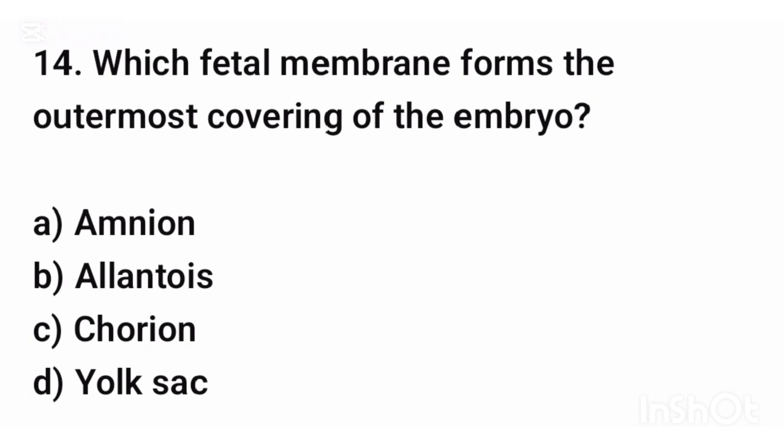Question number fourteen. Which fetal membrane forms the outermost covering of the embryo? The correct answer is option C: Chorion.